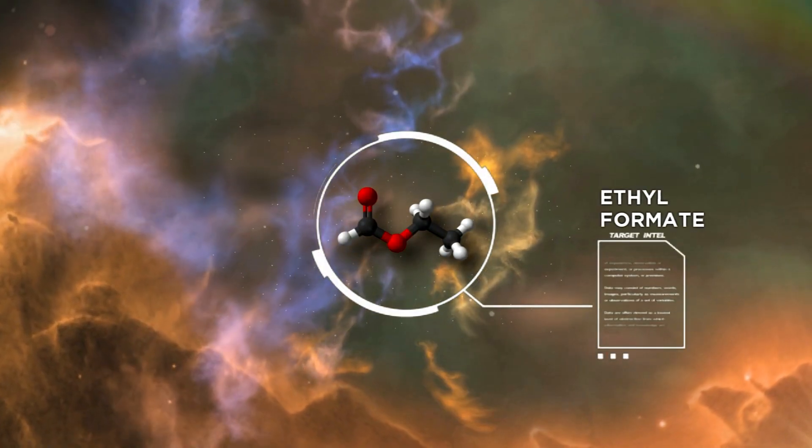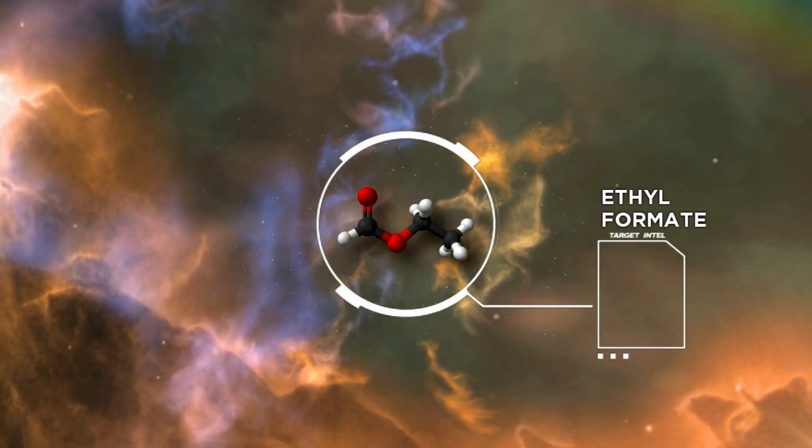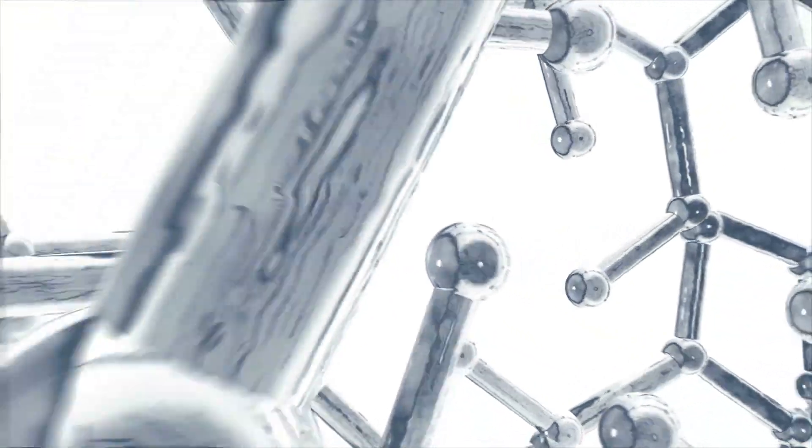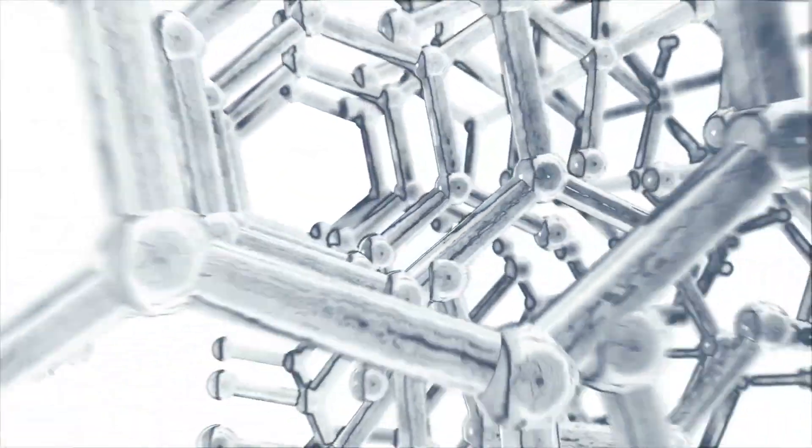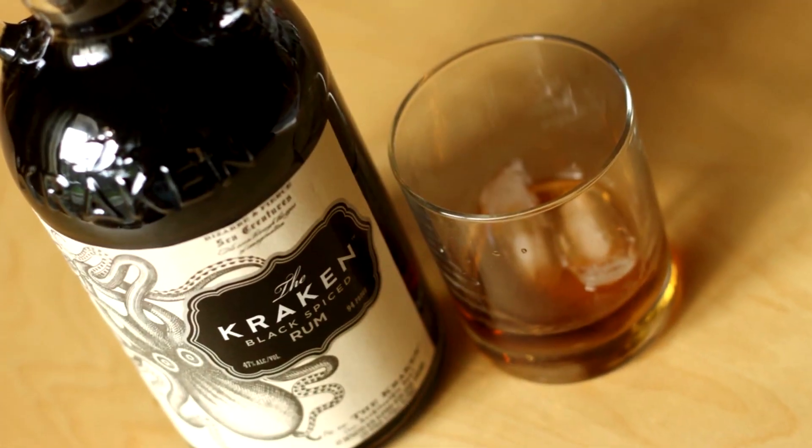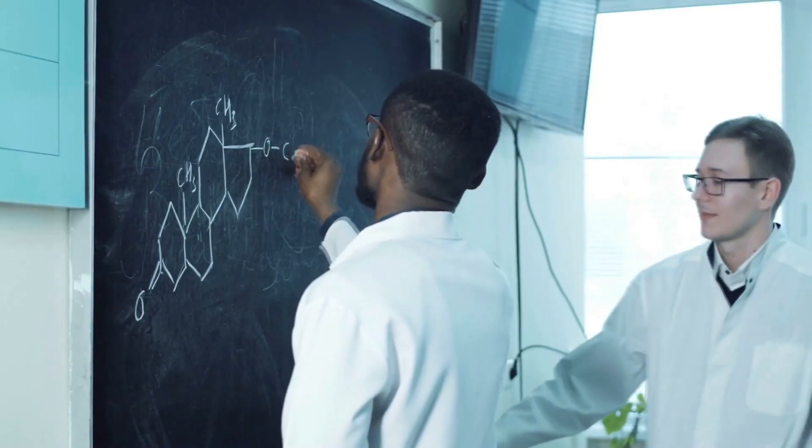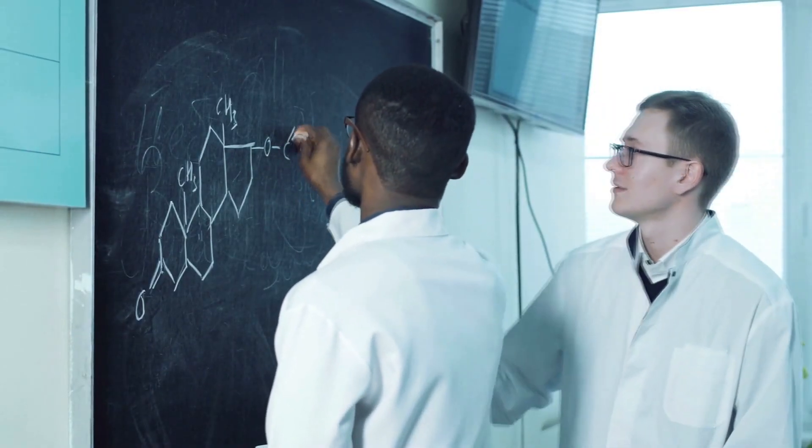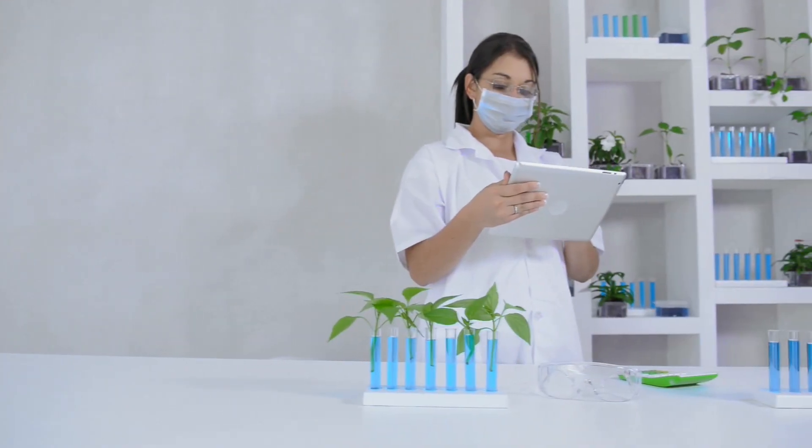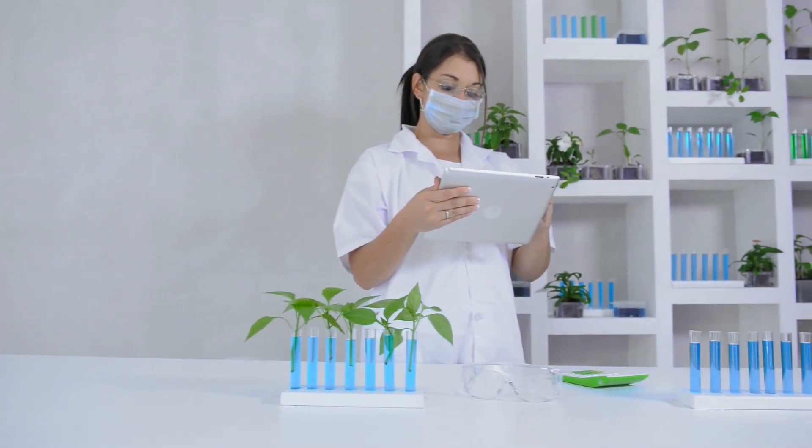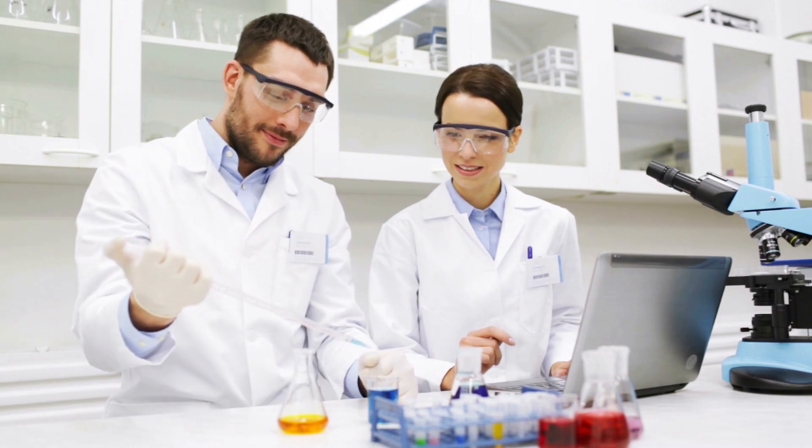There, they found a large quantity of a material called ethyl formate. You may not have heard of this material, but it turns out this is the chemical that gives raspberries their taste and also rum its smell. The scientists were actually desperate to find amino acids, as it would help them in their search for exactly how life is created. But they were certainly not disappointed with their find.